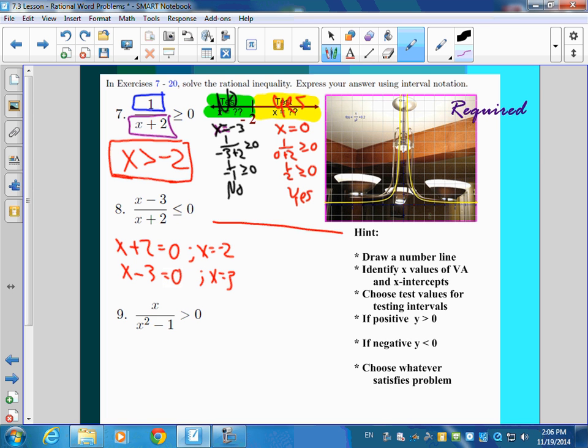So you're making your little division line. You set the numerator equal to zero and the denominator equal to zero. Do both of those, and then you'll get your divisions: negative two and three. Now I have three to check—here, here, and here.